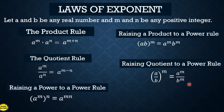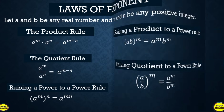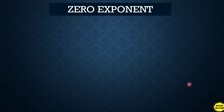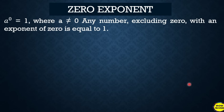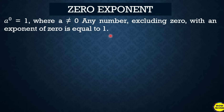Now, the zero exponent: a raised to zero is equal to one, where a is not equal to zero. Any number excluding zero, when raised to zero, the answer is always one. So remember: any number raised to zero, no matter how big or small, the answer is always one.